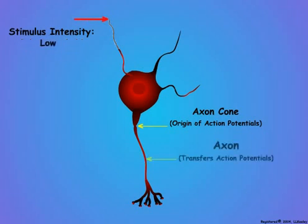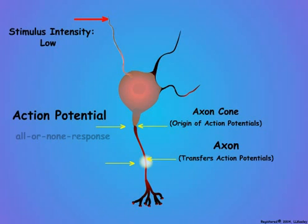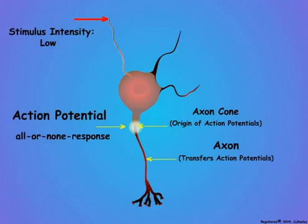However, if the stimulus intensity is sufficiently strong to cause a receptor potential that reaches the axon cone, it will generate action potentials in the axon. Action potentials are all-or-none responses, so they are not proportional to the intensity of the stimulus. The more intense the stimulus, the greater the receptor potential in the dendrite, and the higher the frequency of the action potentials in the axon.